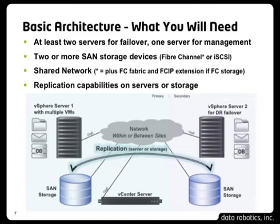For the required elements to put a solution together, you'll need servers — likely already in place — and with a hardware-independent host-based approach you can use older or lower-cost servers for your failover environment. You'll need two or more storage devices, and we recommend SAN storage for the flexibility and pooling needed. Within a virtualized environment with vSphere Essentials Plus, you'll want a SAN. A shared network is important, and fiber channel fabric with FCIP extension over the WAN would be required for fiber channel storage. Then you'll need replication capabilities.